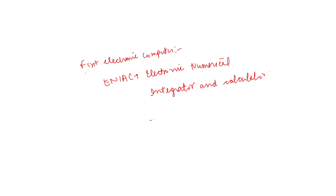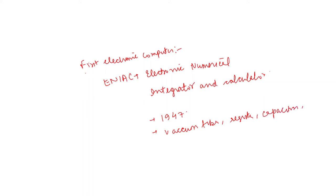ENIAC was developed in 1947. It used vacuum tubes, registers, capacitors, and switches. It was much faster than Mark I. That is ENIAC — the first electronic computer.